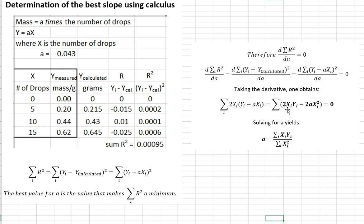And if you expand this, you'll get 2xi yi minus 2axi squared. You can cancel out the 2. And solving for a, this is what you get. That the best value of a is the sum of the number of drops times the experimental mass. That sum divided by the sum of the number of drops squared over all the measurements. So let's take a look at how this works out.